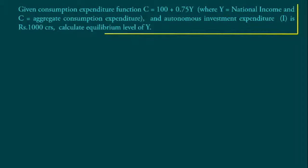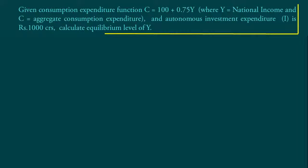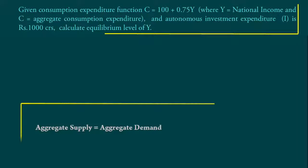Given consumption expenditure function C = 100 + 0.75Y (where Y = National Income and C = aggregate consumption expenditure), and autonomous investment expenditure I = Rs.1000 crores, calculate equilibrium level of Y. Equality between Aggregate Supply and Aggregate Demand determines Equilibrium Income.